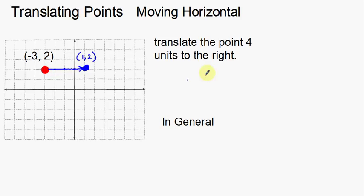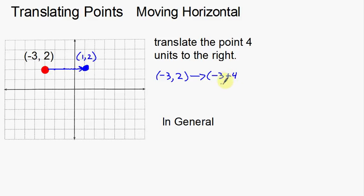So now let's look at this more using some notation. I used to have the point negative three, two. Now I'm going to change that point — I'm going to take that negative three. Notice only the negative three changed into a one. How did it change from negative three to one? We're moving four units to the right, so we're actually going to add four. You can think of this as a number line — if I go to the right four, that means I'm adding four. The y coordinate didn't change, so now we have a new coordinate of one, two.